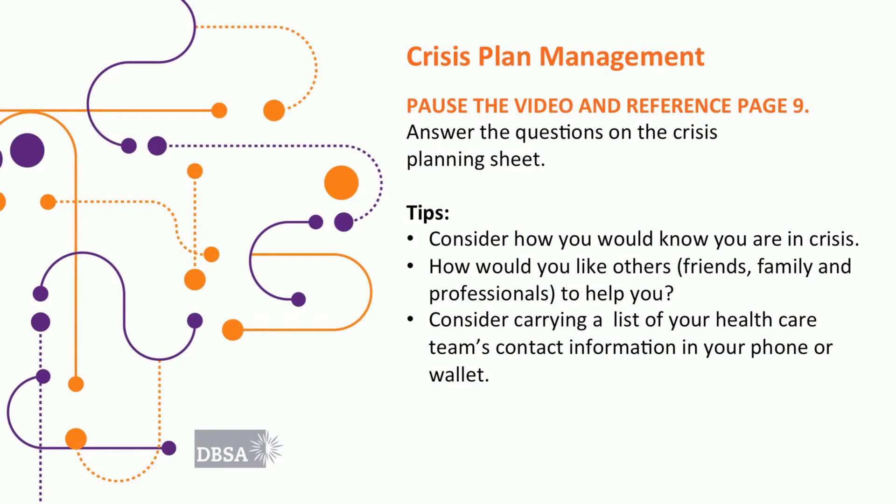As we move into the crisis planning section, it can also be very helpful to speak with those same supporters you just listed about how they can help. Can they call your doctors if they are concerned about you? Have they signed the necessary forms for those conversations to occur? Is there a preferred hospital should that be necessary? What is the most helpful way they can support you if you are experiencing depressive or manic symptoms, or even delusions or hallucinations? Pause the video and take a few minutes to answer the questions on the crisis plan sheet.